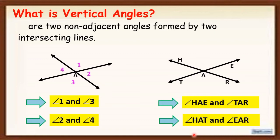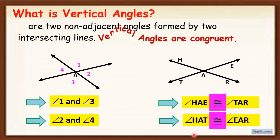So remember, when we say vertical angles, it is two non-adjacent angles. So pag sinabi natin non-adjacent, wala silang common sides — they have no common sides. And always remember that vertical angles are congruent.